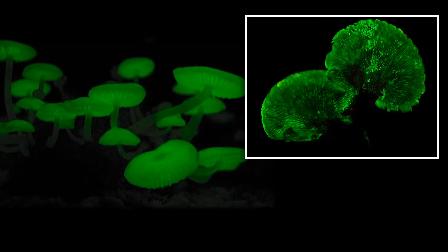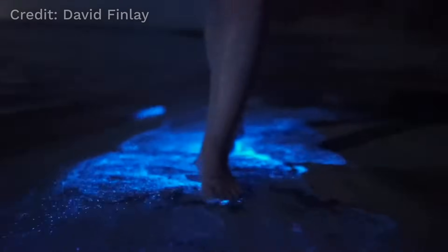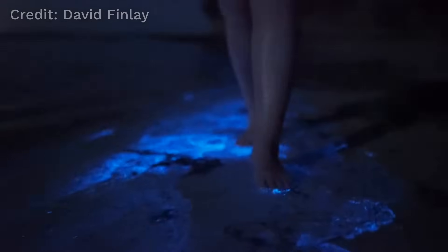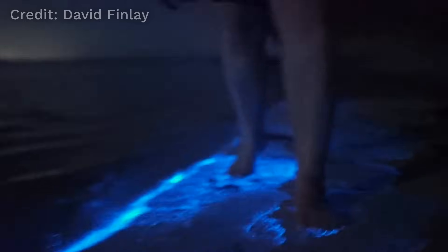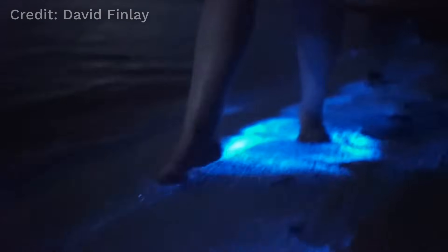But maybe the most spectacular of all are these. They're tiny microscopic organisms found in the ocean. And they sometimes wash up on shore. They're called sea sparkles. And they glow when the water around them gets disturbed.